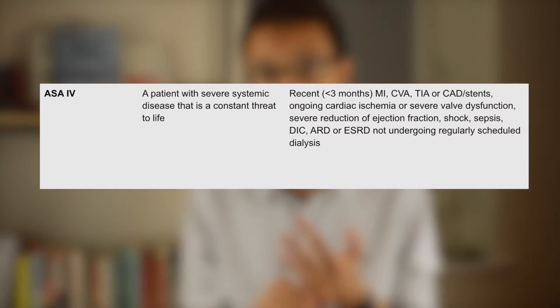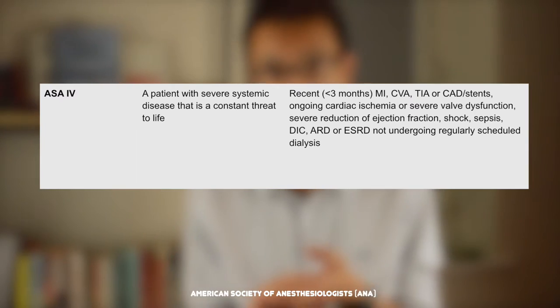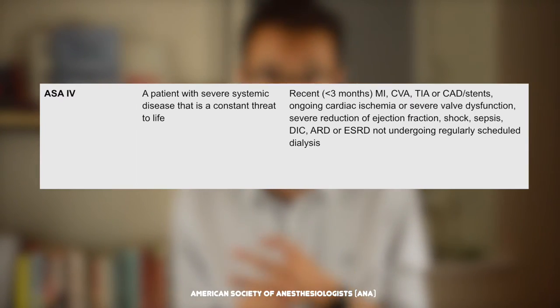We then have ASA 4 patients, who are those who have a severe systemic disease that is a constant threat to life. This would include poorly controlled COPD, patients who have had a recent MI, stroke, or TIA within the last three months, patients with sepsis, or even patients with unstable angina brought on without a stimulus. In these types of patients, elective treatment should be avoided, and where treatment is necessary, it should be referred to a hospital.